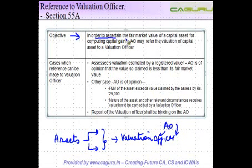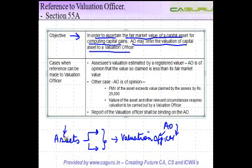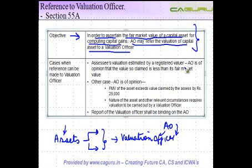In order to ascertain the fair market value of a capital asset for computing capital gains, the AO may refer the valuation of a capital asset to a valuation officer. Unless the asset is valued fairly, capital gains cannot be computed in an objective manner. There are assessees who might want to bring down the value to a lower number to pay lower taxes, and to cover these situations the AO has the power to refer the matter to the valuation officer.